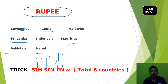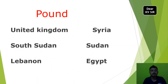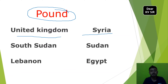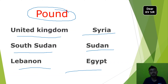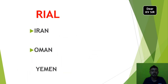SIMSIMPN — that is the Rupee mnemonic trick. Next, Pound. The Pound currency is used by United Kingdom, Syria, South Sudan, Lebanon, and Egypt.